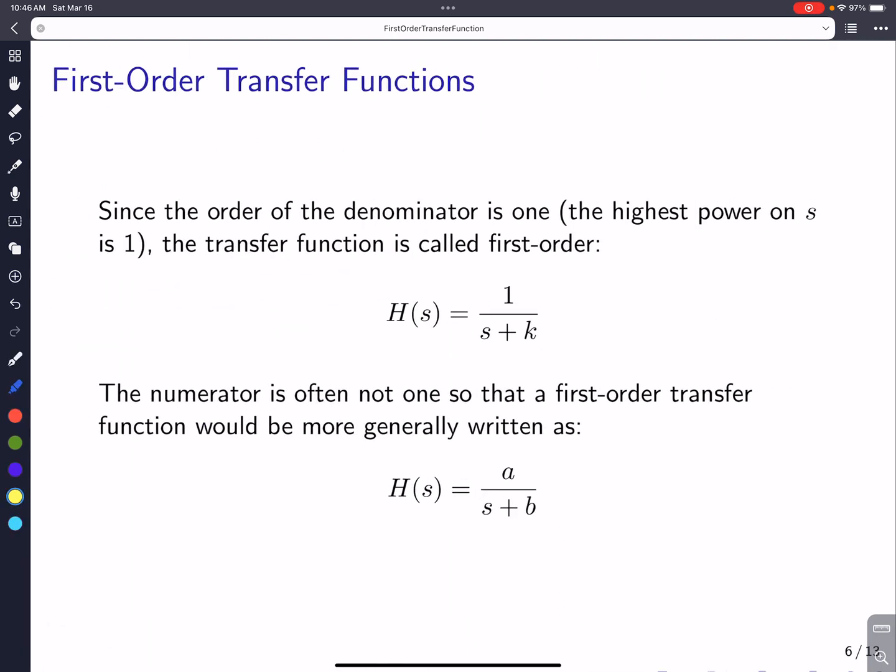Now since the denominator, the order of the denominator is one, in other words, the highest power on s is one, this transfer function is called first order. It's a first order transfer function. Now notice also we have a one here. That's not always the case. The numerator is often not one. So in general, we would write the first order transfer function in this form. It's some constant in the numerator, which I call here a, and then divided by s plus b, where b is the other term.